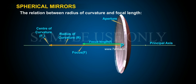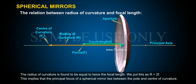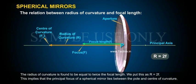The relation between radius of curvature and focal length. The radius of curvature is found to be equal to twice the focal length. We put this as R equals 2F. This implies that the principal focus of a spherical mirror lies between the pole and the centre of curvature.